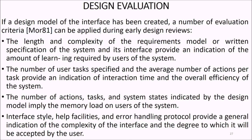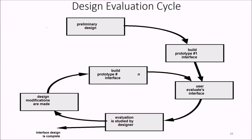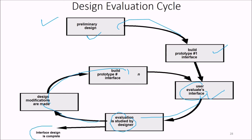To evaluate interface design, several criteria apply. The length and complexity of the written specification provides an indication of the amount of learning required by users. The number of user tasks specified and actions per task indicates interaction time and overall efficiency. The number of action tasks and system states indicated by the design model implies memory load on the user. Interface style, help facilities, and error handling protocol provide a general indication of interface complexity and the degree to which it will be accepted by users. The evaluation cycle goes: preliminary design, build prototype, user evaluates, designer studies evaluation, design modifications are made, build next prototype, user evaluates again, and if acceptable, interface design is complete — otherwise the cycle repeats.